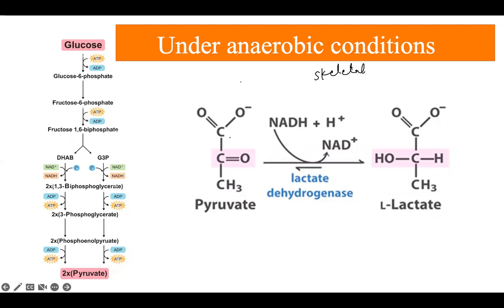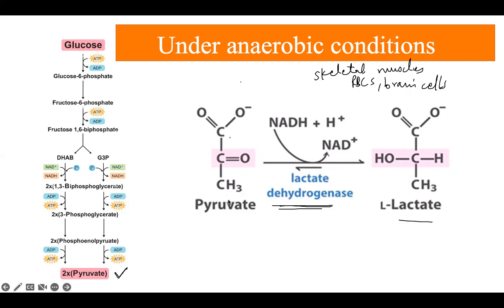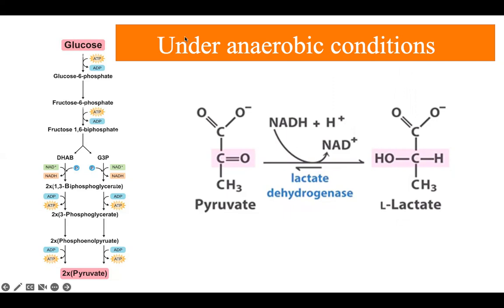Under anaerobic conditions, in cells such as skeletal muscles, RBCs, or brain cells, when there is an insufficient amount of oxygen present, pyruvate cannot migrate into the mitochondria, be converted into acetyl-CoA, and subsequently enter the Krebs cycle. Instead, this pyruvate is acted upon by an enzyme called lactate dehydrogenase and is converted into lactate. During this process, one NADH molecule is oxidized to NAD+.